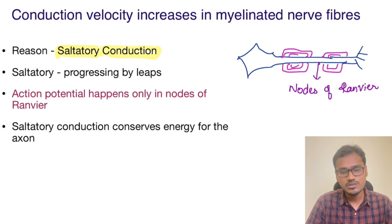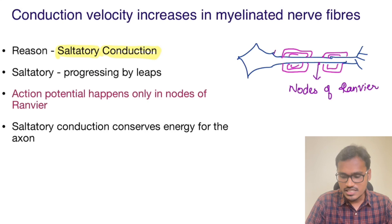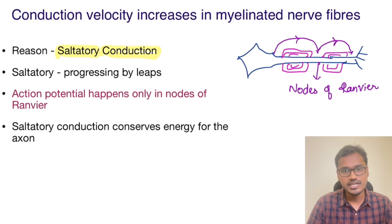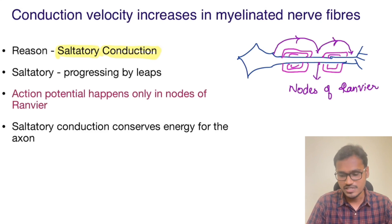The action potential keeps jumping from one node of Ranvier to the next, and that's why they have named it saltatory — it is progressing by leaps. So why does it have to jump, and how is this happening? Let's understand in detail.